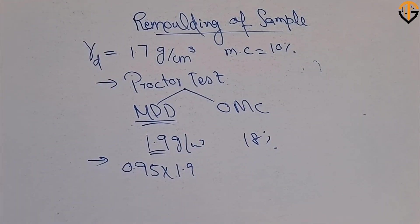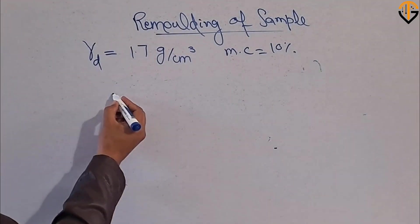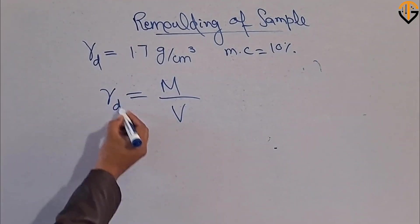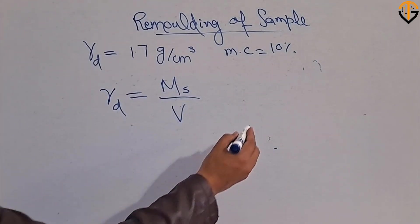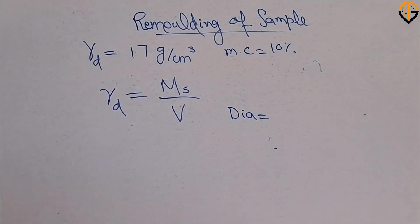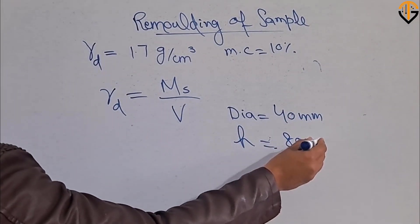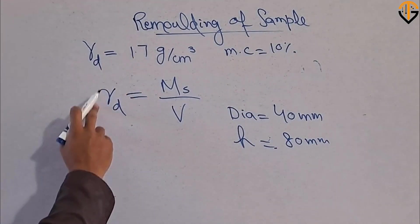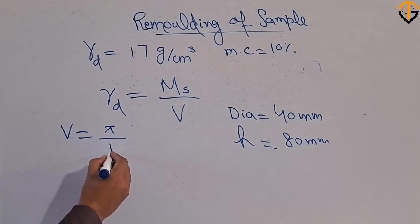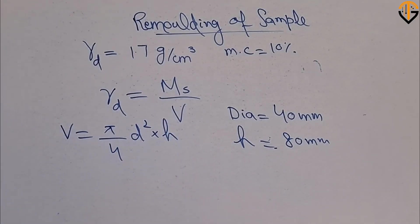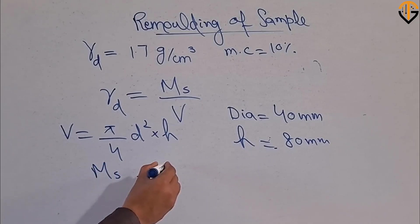Now, let's assume you have these parameters and want to remold the soil sample. Density equals mass per unit volume; for dry density, it is the mass of dry soil solids divided by volume. You must have the volume — let's say the mold dimensions are diameter 40 mm and height 80 mm. Calculate the volume of the mold using the formula pi/4 × d² × h. With the dry density, you can then find the mass of dry soil solids.